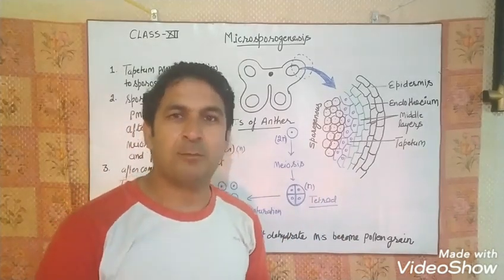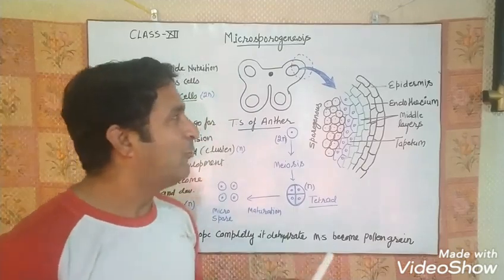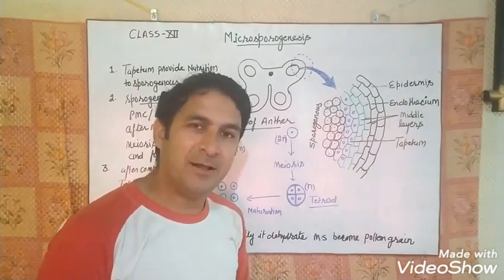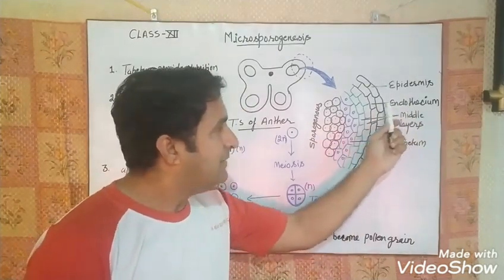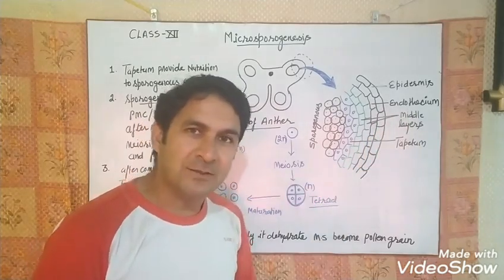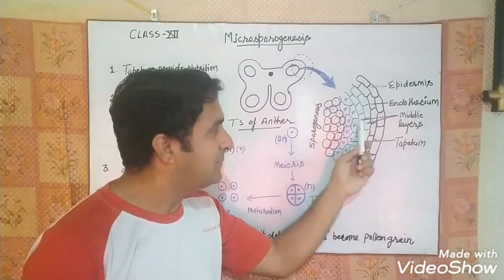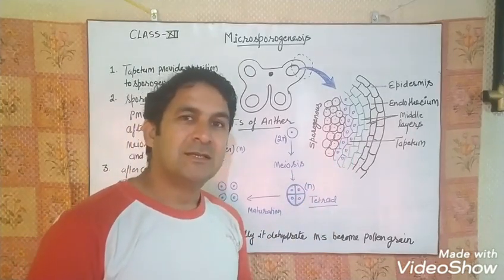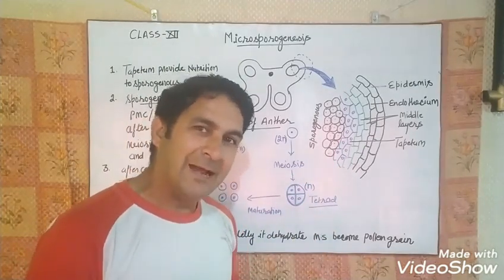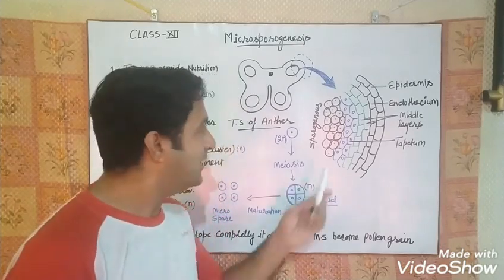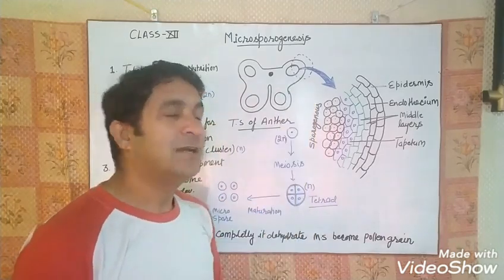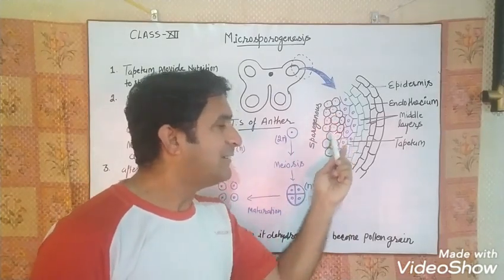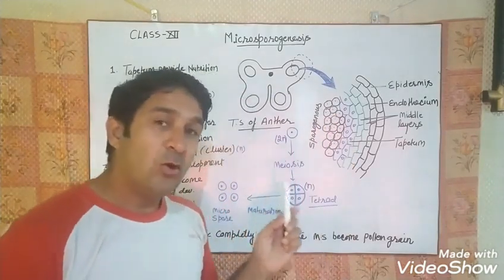If you look at the microscopic structure of one area of the anther, you can see all the layers clearly. The outermost layer is called the epidermis. Inside that is the endothecium, then two to six layers of middle layer, and then the tapetum. The tapetum is responsible for providing nutrition to the cell mass inside the microsporangium.